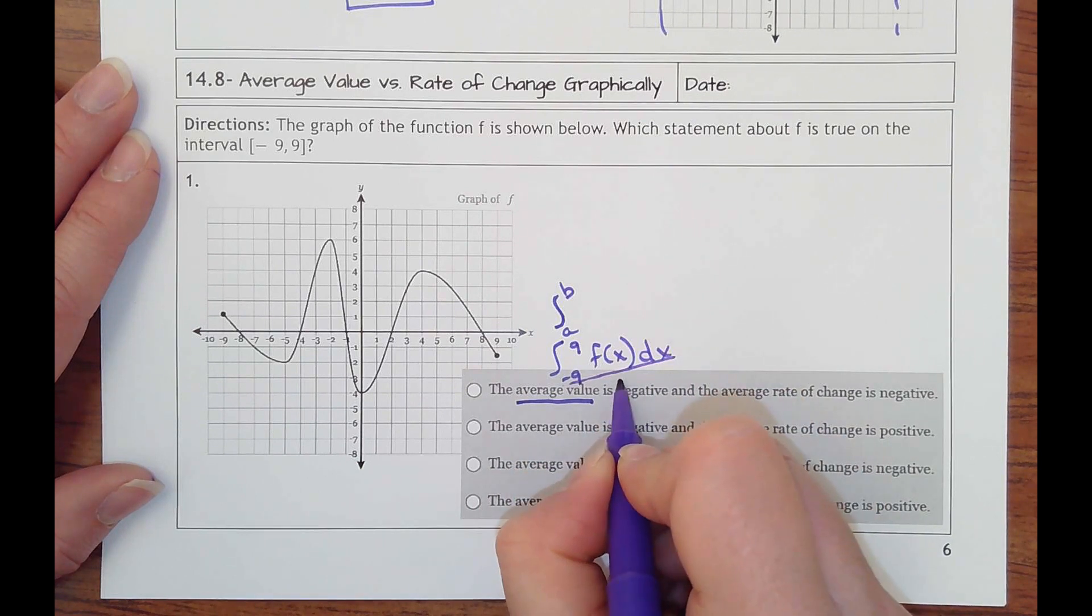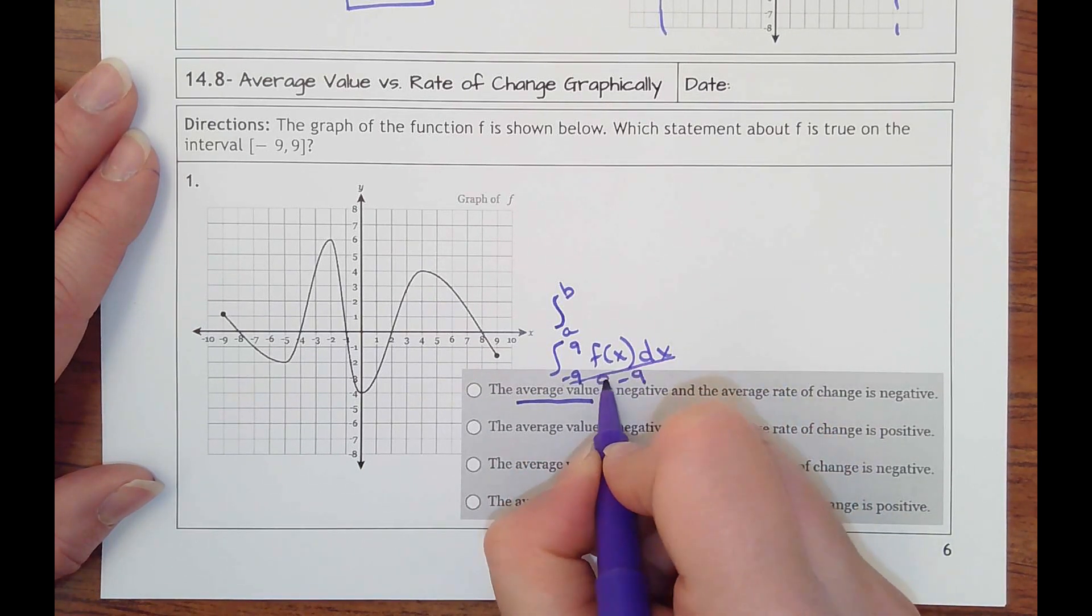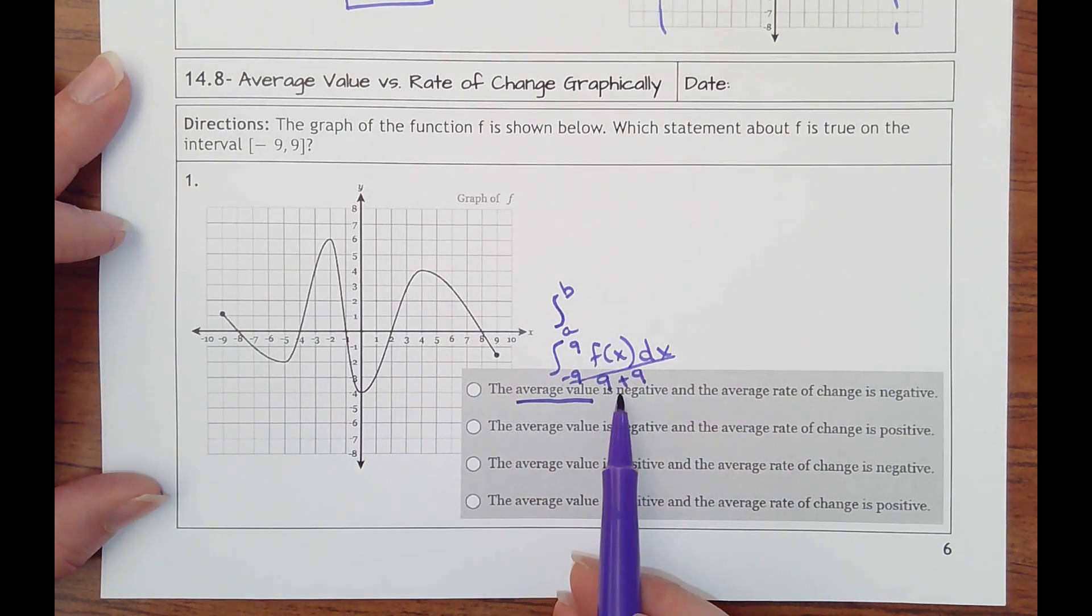And then dividing by, sorry, 9 minus negative 9, which would be 9 plus 9. I'm covering 18 units on the x's.